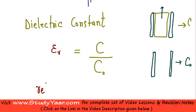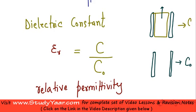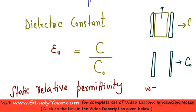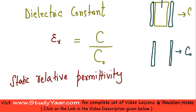The dielectric constant is represented by the symbol εᵣ (epsilon r). It is also known as relative permittivity, and sometimes as static relative permittivity, because it corresponds to a frequency of zero — that is, DC voltage. This is your relative permittivity, as distinct from absolute permittivity.